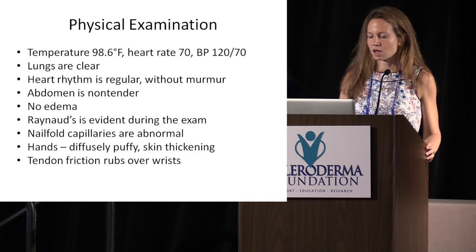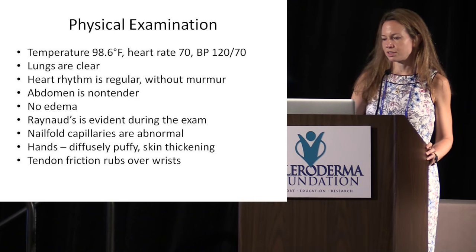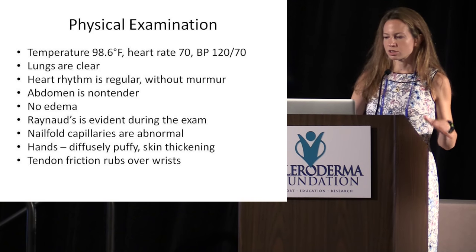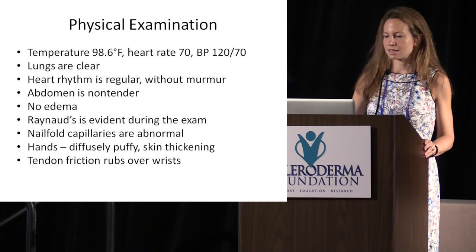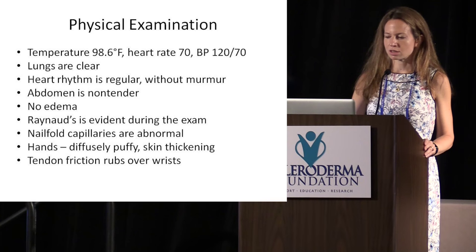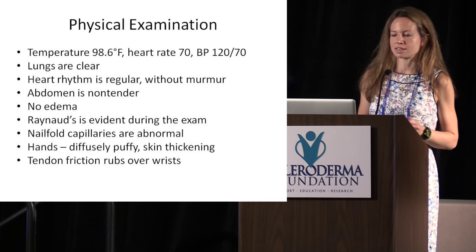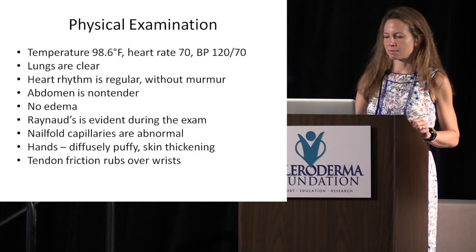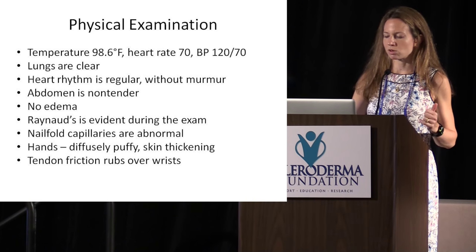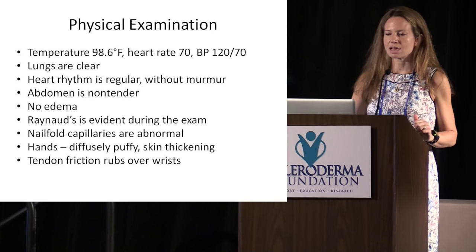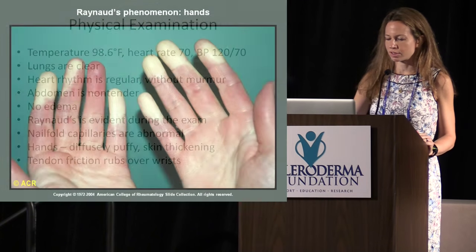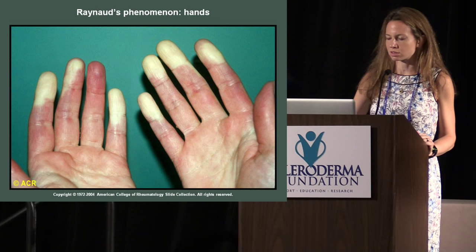She has also noted some changes in the skin of her hands. On physical examination, her vital signs are normal. When we listen to her lungs, they sound clear, and her heart sounds normal. She's not swollen, her belly's okay. And in that cold physician's exam room, Raynaud's phenomenon is evident. Her nail fold capillaries are abnormal, her hands are puffy, and there's skin thickening and tendon friction rub.